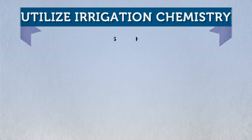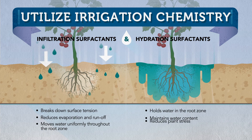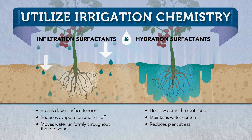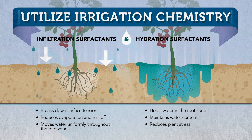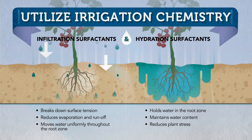Irrigation chemistries come in two basic types: infiltration surfactants and hydration surfactants. Before we explain these chemistries any further, let's take a look at how soil and water interact.